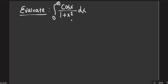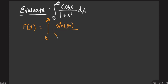To evaluate this kind of integral where there is no direct path, we will use Feynman's trick. We are going to define f(y) as the integral from 0 to infinity of sin(xy) divided by x, whole into (1 + x²), dx. This is going to be our go-to function, and we are trying to use it in order to evaluate our actual integral.